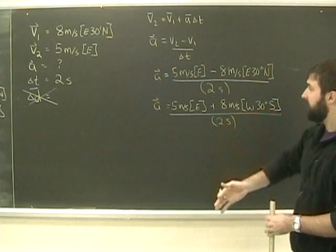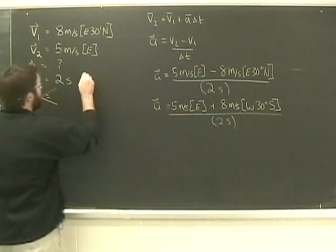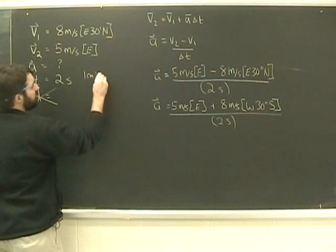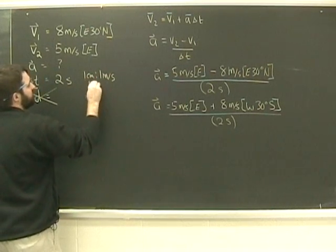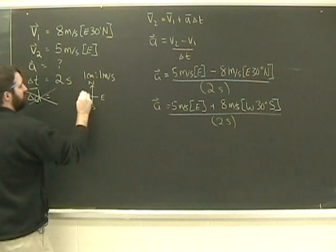To make the diagram now, I need a scale. One centimeter is going to be one meter per second, and I need my compass rose: north, east, south, west.